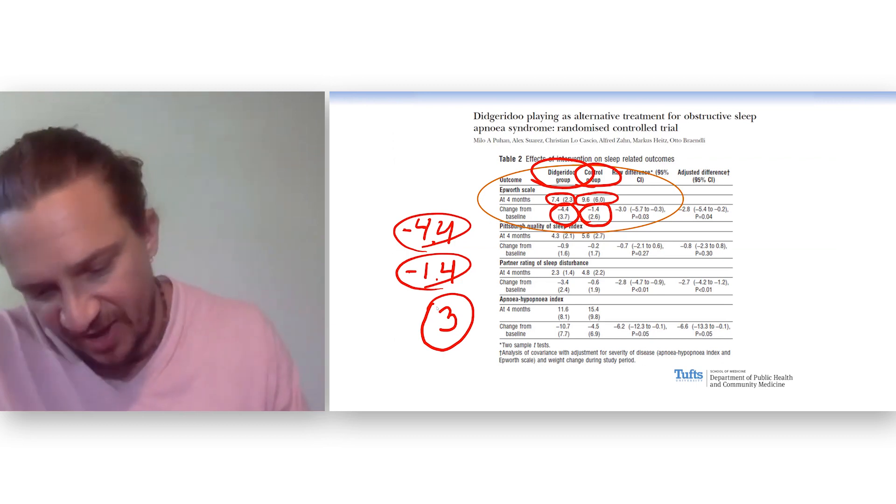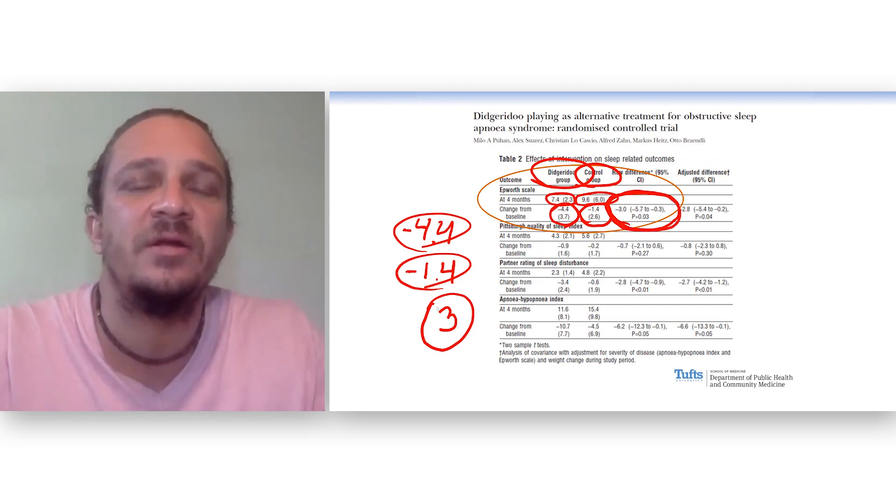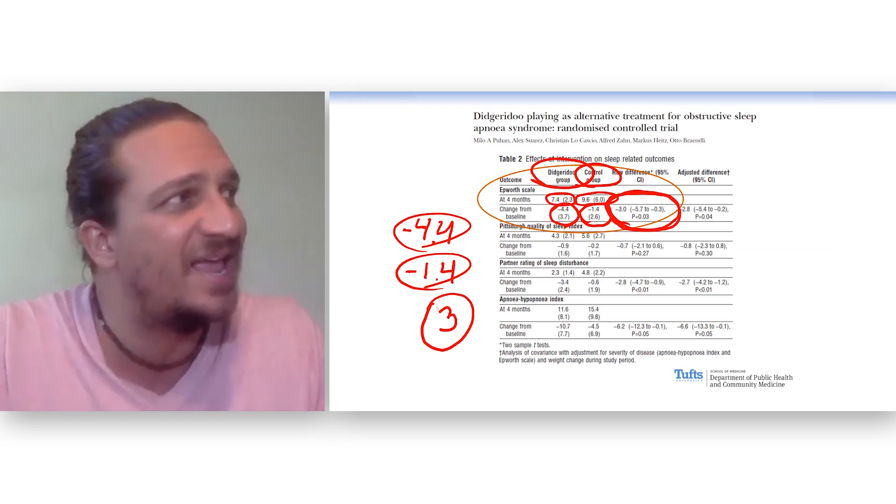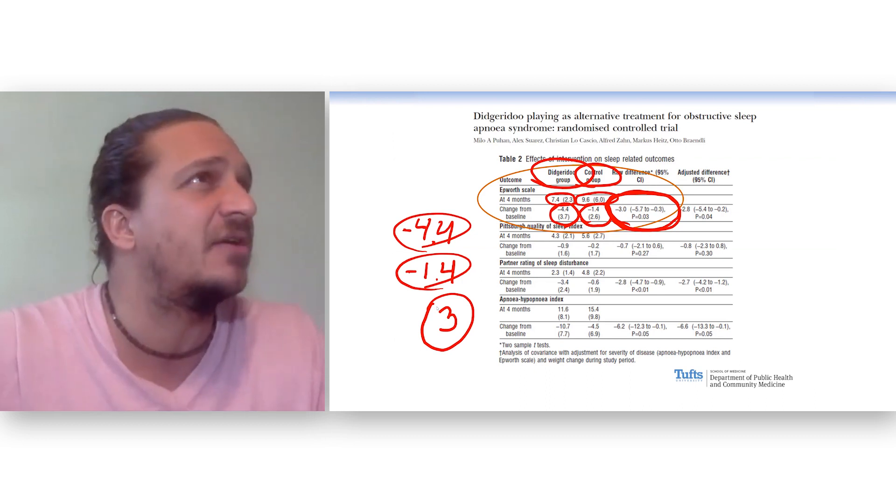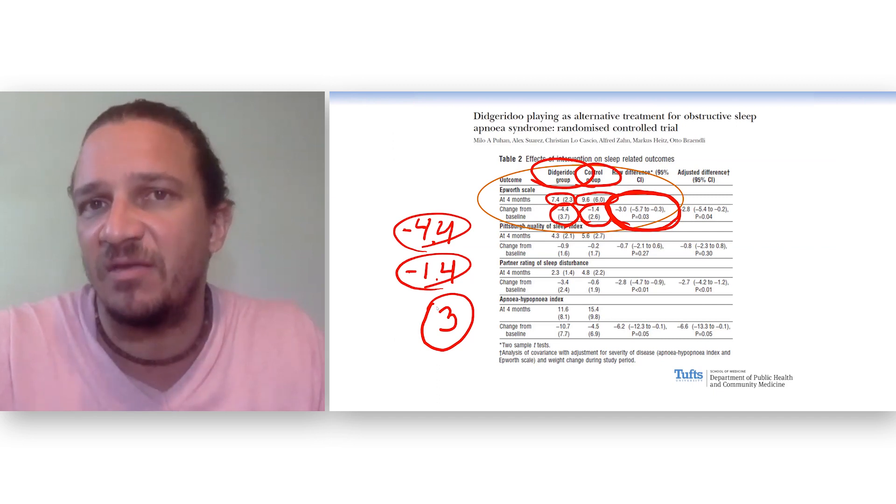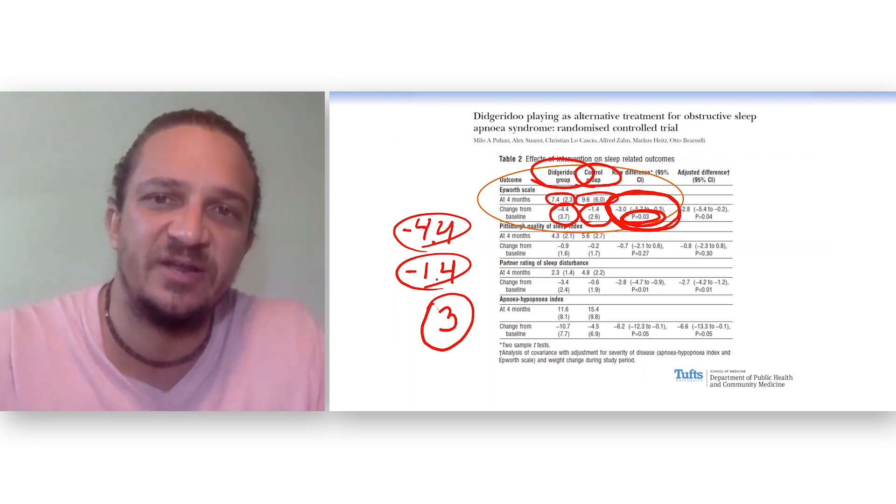So if you notice right here, we see that 3, and there's a confidence interval around it. That confidence interval does not include 0. It doesn't include the null value. So this tells you that training for the didgeridoo induces a statistically significant improvement in the Epworth scale. Now, because that confidence interval does not include 0, you can see that the p-value is statistically significant.